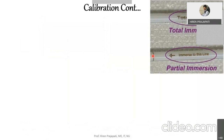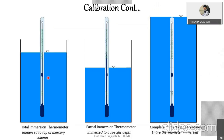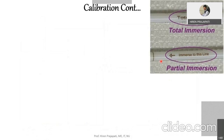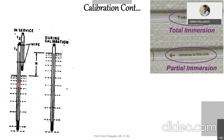These indications are already available on thermometers. For total immersion, you dip up to the mercury column. For partial immersion, you dip up to the reference line. Sometimes, if you are using a complete immersion thermometer but it is not possible to dip it completely — some graduations remain outside — that will give you a wrong temperature reading.